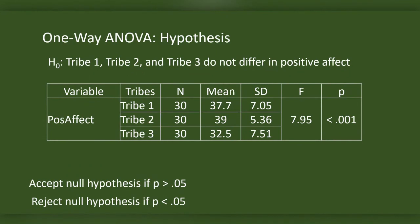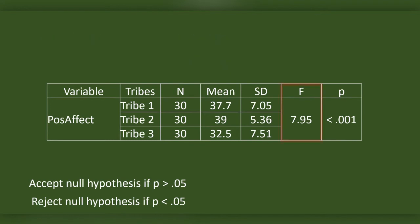This is the ANOVA table. Our null hypothesis is tribe 1, tribe 2, and tribe 3 do not differ in positive affect. We will have to accept the null hypothesis if p is greater than 0.05 and reject the null hypothesis if p is less than 0.05. This is F, the coefficient that shows the difference between tribe 1, tribe 2, and tribe 3 in positive affect. And this is p or probability, which shows if F is significant or not. P is less than 0.05, so we will have to reject the null hypothesis.